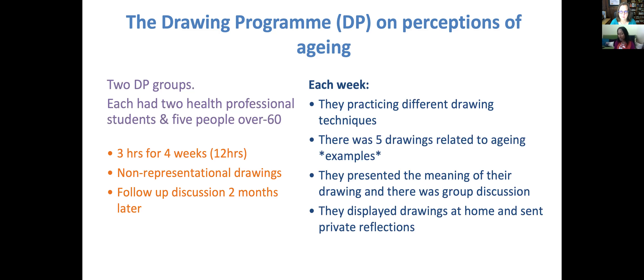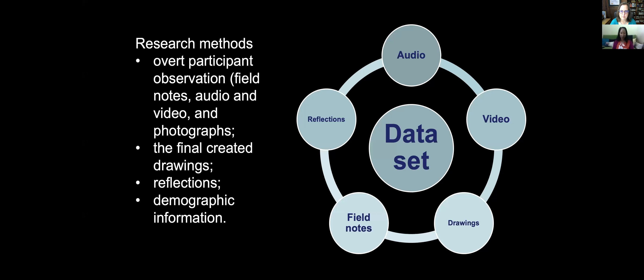Each week they practiced different techniques and exercises. There were five drawings related to aging; they presented the meaning of their drawings in group discussion. She asked them to display their drawings at home — just so they'd catch their eye — and if anything else came up around drawing or aging, to let her know. She thought people weren't going to do that, but they did. They'd say, 'It was up the stairs and everybody in the lounge could ask me about it and talk about it.'